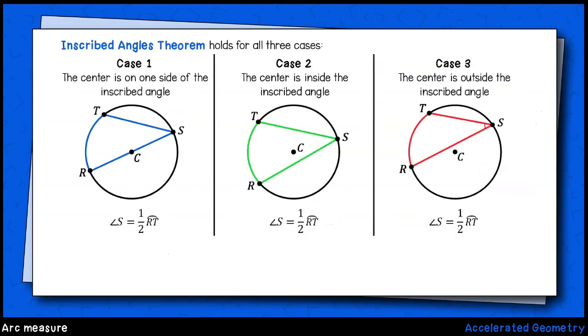To generalize, this is called the inscribed angles theorem. Once again, it states that the measure of an inscribed angle will be half the measure of the arc that angle intercepts.